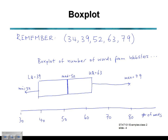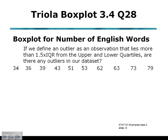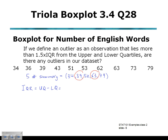Our question asks: if we define an outlier as an observation that lies more than 1.5 times the interquartile range from the upper and lower quartiles, are there any outliers in our data set? The interquartile range is simply the upper quartile take away the lower quartile: 63 subtract 39, giving us an interquartile range of 24.